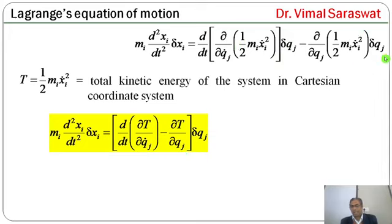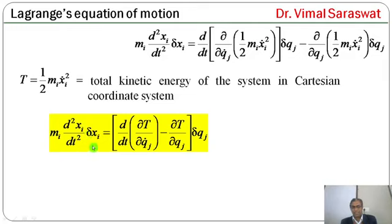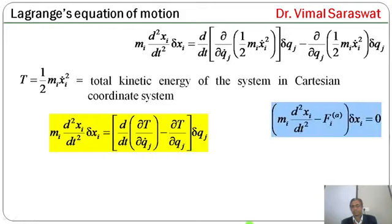The second term of D'Alembert's principle is -Fi_applied * δxi. Substituting δxi = (∂xi/∂qj) * δqj: -Fi_applied * δxi = -Fi_applied * (∂xi/∂qj) * δqj = -Qj * δqj. Here, Qj = Fi_applied * (∂xi/∂qj) is the j-th component of the generalized force.